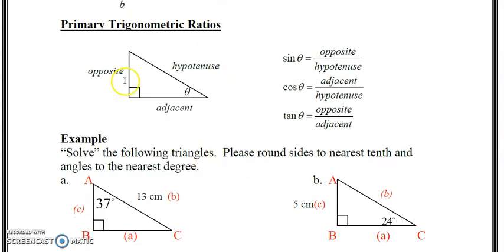You can recall the primary trig ratios we learned from last year. So if theta was down here in the bottom right, and we have our right angle here in the same location as above, the opposite would be opposite of the angle theta, the unknown angle. Adjacent, you can see there it's attached, and the hypotenuse never changes. So your adjacent and your opposite can change depending on where your reference angle is. Sine theta equals opposite over hypotenuse, cosine theta equals adjacent over hypotenuse, and tan theta equals opposite over adjacent.